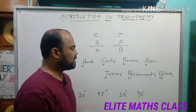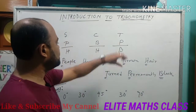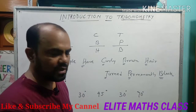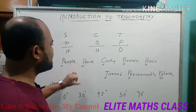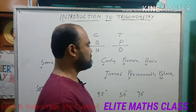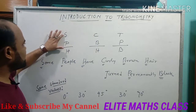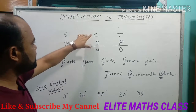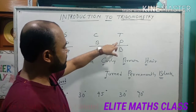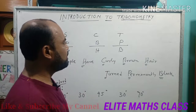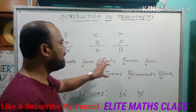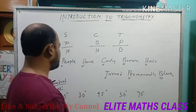In this class — in the previous class, we studied the ratios of sin, cos, tan, sec, and cosec. Now, here is a technique for how you can easily memorize the ratios. Sin theta equals perpendicular by hypotenuse, cos theta is base by hypotenuse, tan is perpendicular by base. Using this technique, you will never forget these relations.